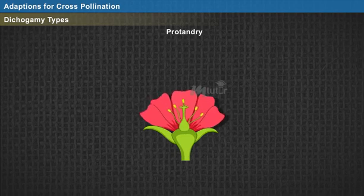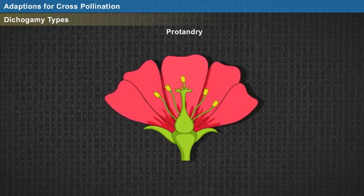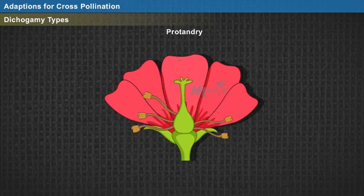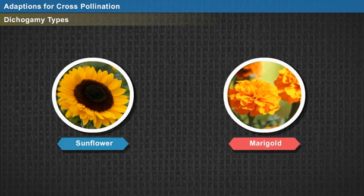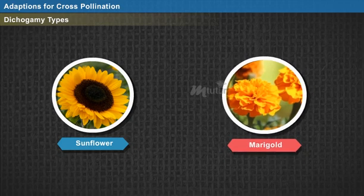Protandry refers to the condition of bisexual flowers where the stamens mature before the carpels. By the time the carpels get matured, the stamens are already dead. Hence, the flowers can reproduce only through cross-pollination. Examples include sunflower and marigold.